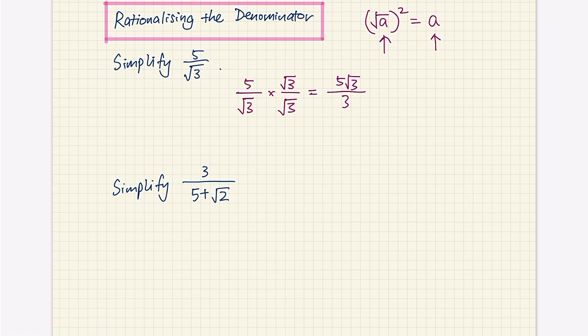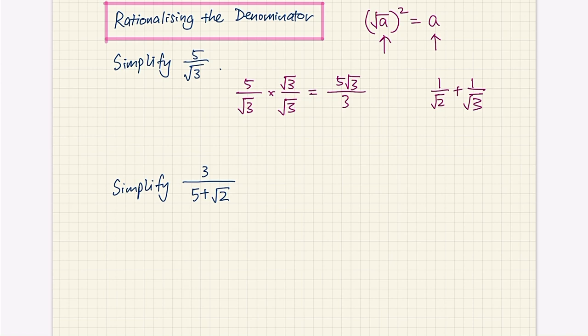It's worthwhile to talk about why we want to do this. We very often learn something for school and don't ask enough questions about why it's learned. The reason why we want to rationalize the denominator is that if we were to simplify fractions like 1 over root 2 and 1 over root 3, there's no good way to do that because both denominators are in surd form and are irrational numbers. It's very difficult to find a common denominator that is easy to work with. The idea is to rationalize the denominator and turn both denominators into rational numbers, whereupon we can simplify them.